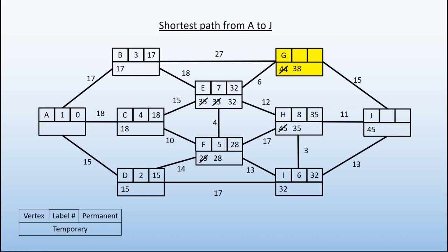We move to G. This is our ninth vertex. 38 is its permanent label. And again, we can't beat that 45. 38 plus 15 is more than 45, so we leave that. And we've only got one vertex left. It's J. This is the tenth vertex to be labeled, and its permanent label is 45.